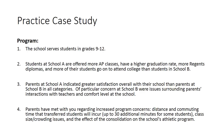Four items could be classified as relating to program. Number one: the school serves students in grades 9 to 12. Number two: students at School A are offered more AP classes, have a higher graduation rate, more Regents diplomas, and more of their students attend college than students at School B. Number three: parents at School A indicated greater satisfaction overall than parents at School B, with particular concern at School B around parents' interactions with teachers and comfort level. Number four: parents have met with you regarding increased commuting time for transferred students, class size and crowding issues, and the effect of the consolidation on the school's athletic program. All of these statements relate to the school's programs and the level of quality at those programs.